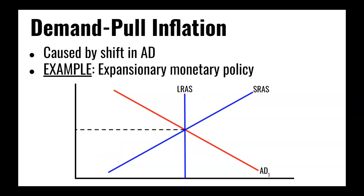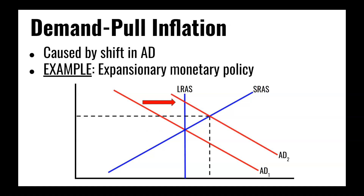Demand pull inflation involves shifting aggregate demand to the right as a result of expansionary monetary or fiscal policy. When that happens, aggregate demand shifts, moving our equilibrium point along the short-run aggregate supply curve to a point at which output is increased, but price level has also gone up.